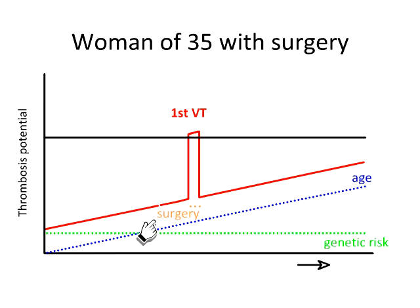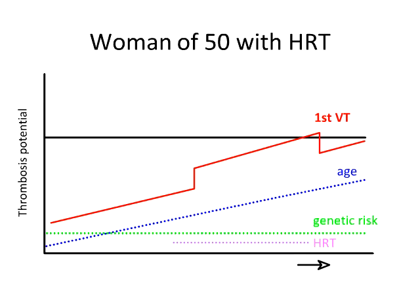When we look at the thrombosis potential model, this can be understood. Surgery is such a strong risk factor that the thrombosis potential increases enormously, but then when the period is over, it goes down again considerably. That means the thrombosis potential drops substantially, and it will take a very long time until this person crosses the thrombosis threshold again. Depending on the strength of the risk factor, the potential drops more or less. For example, a woman of 50 who used HRT — a less strong risk factor — her thrombosis potential drops less, so she stays closer to the threshold and her recurrence risk is higher.